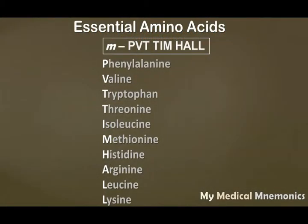"Private" is written as P-V-T in short form, "TIM" is T-I-M, and "HALL" is H-A-L-L. So this ten-letter mnemonic is going to help you remember the ten essential amino acids: P for Phenylalanine, V for Valine, T for Tryptophan, T for Threonine, I for Isoleucine, M for Methionine, H for Histidine, A for Arginine, L for Leucine, and L for Lysine.